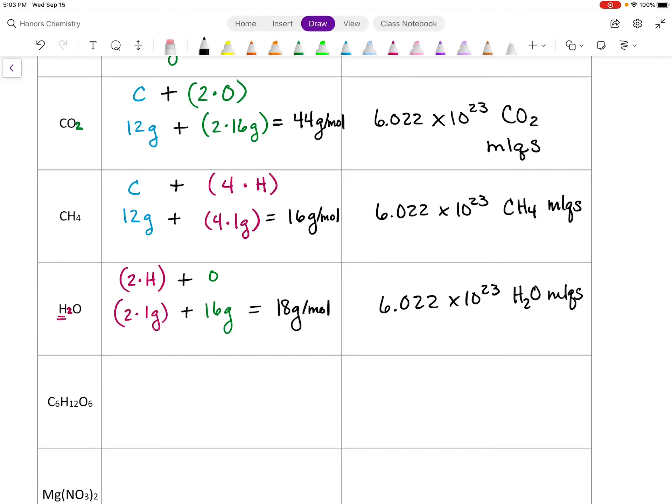So now we have a nice big one here, which is glucose. Glucose is used a lot in our biology classes, but I like to talk about it sometimes. 6 times the mass of carbon plus we're going to do 12 times the mass of hydrogen. Plus 6 times oxygen.